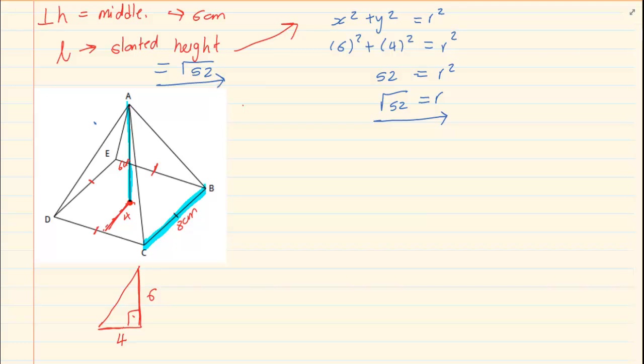Now how do we calculate the surface area? If you take the pyramid and you open it up, the net of the pyramid is a square base. To calculate the area of a square base we know it's length times breadth. Since it's a square it's going to equal to 8 times 8 which is equal to 64 cm squared.